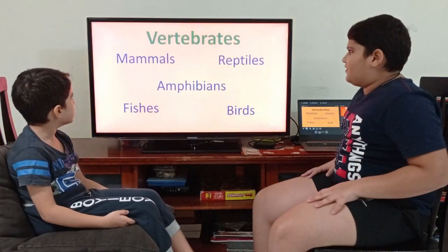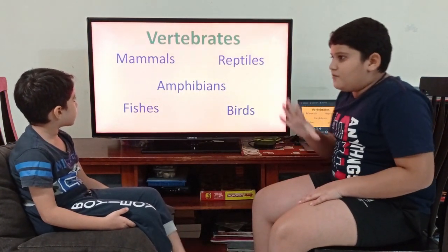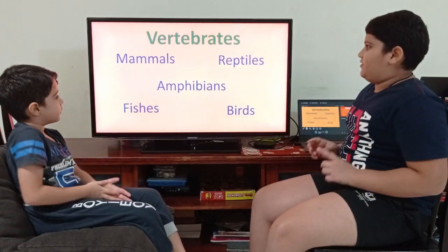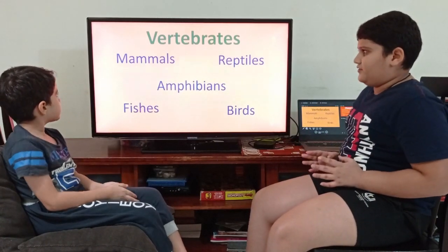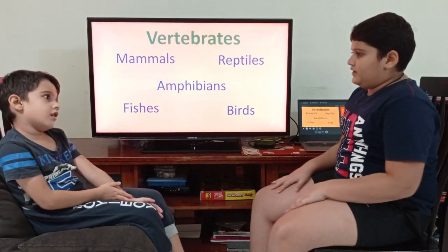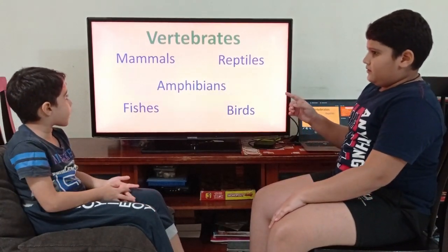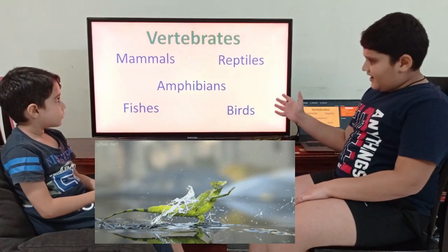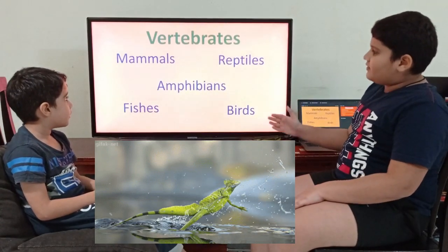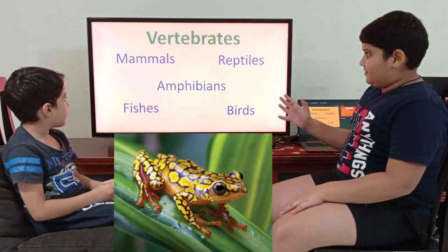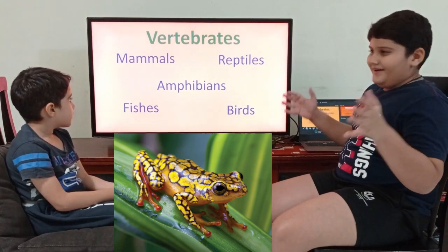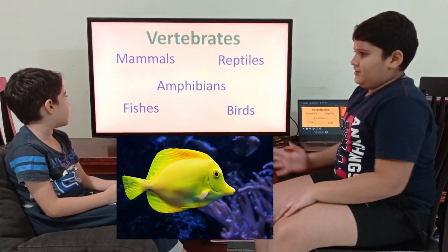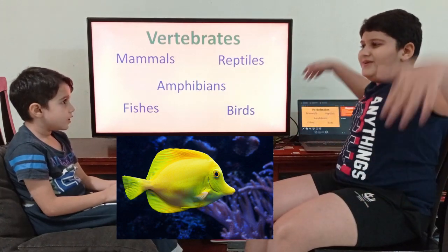There are five types of vertebrates. First one is mammals. And then the second one, reptiles. Amphibians — that's a long word! And then fishes. And then birds.